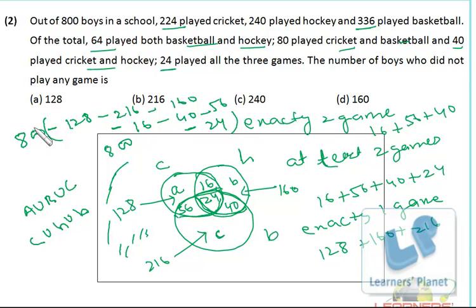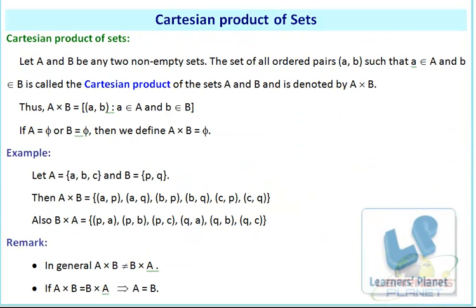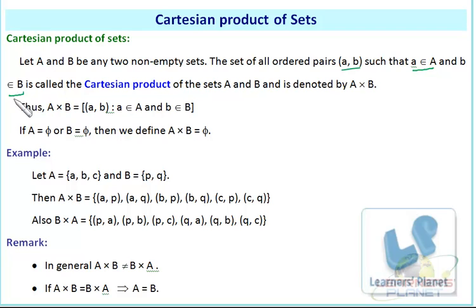You should be conceptually clear on how to solve problems based on three sets using Venn diagrams. Next we look at Cartesian product of sets. Let A and B be two non-empty sets. The set of all ordered pairs (a, b) such that a belongs to A and b belongs to B is called the Cartesian product, denoted A cross B.